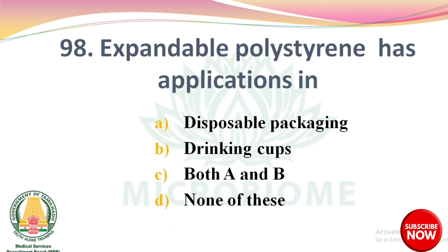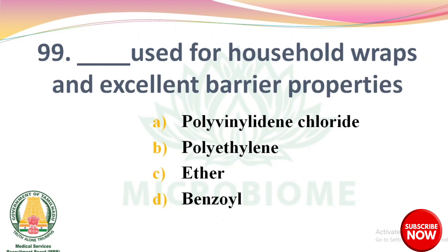Next question: expandable polystyrene has applications in options: disposable packaging, drinking cups, both A and B, none of these. The right answer is Option C: both A and B — disposable packaging and drinking cups. Next question: dash is used for household wraps and has excellent barrier properties. The right answer is Option A: polyvinylidene chloride.